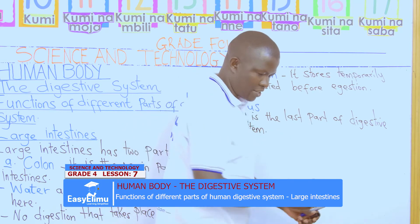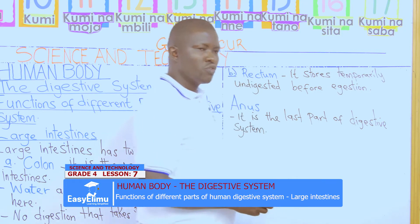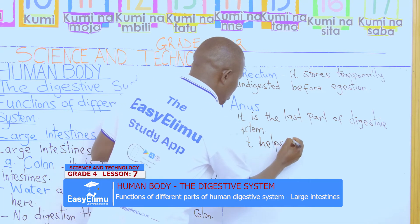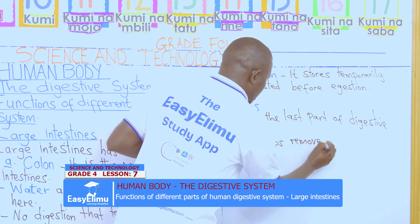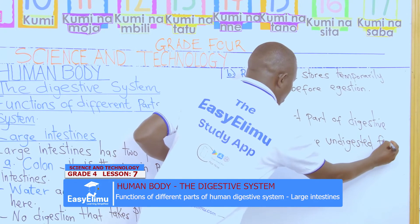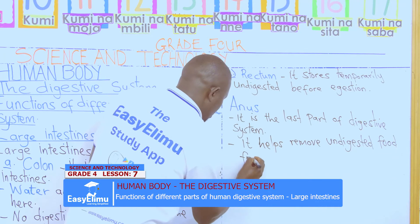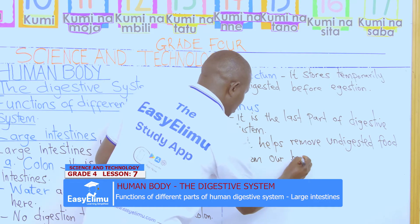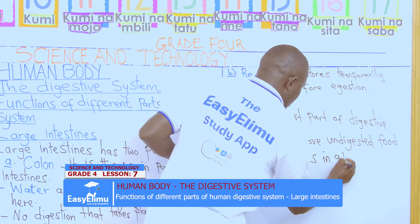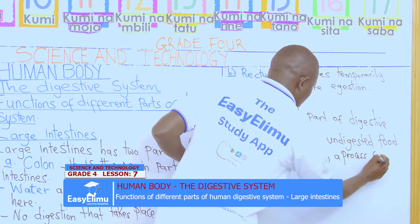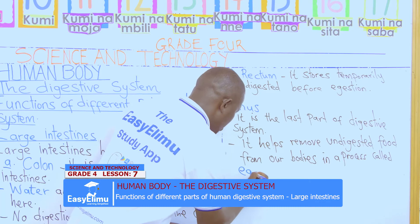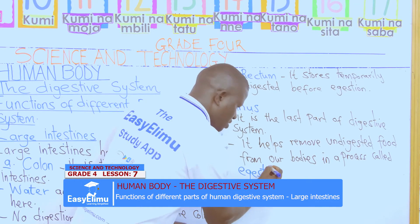As the last part of the digestive system, the work of the anus is to help remove the undigested food from our body. It helps remove undigested food from our bodies in a process called egestion. And that is the end of digestion.